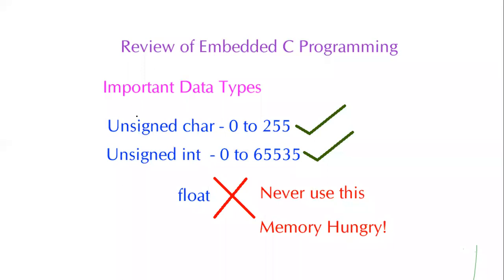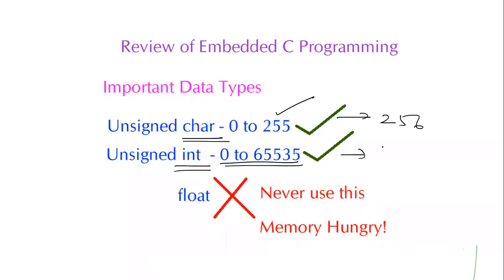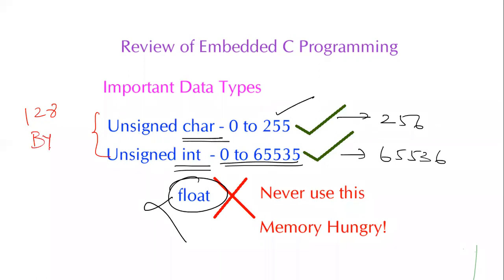Regarding data types: we use unsigned char (range 0 to 255, giving 256 combinations) and unsigned int (range 0 to 65,535, giving 65,536 combinations). Floating point data types are never used in embedded C because they are memory-hungry and our microcontroller has only 128 bytes of RAM. Use unsigned char for numbers 0–255, and unsigned int if the number exceeds 255. Only these two data types are needed.